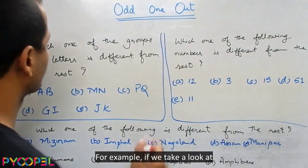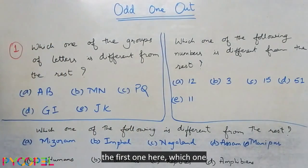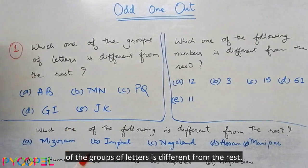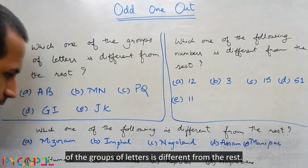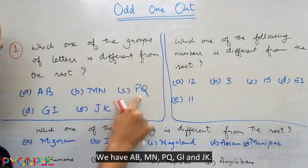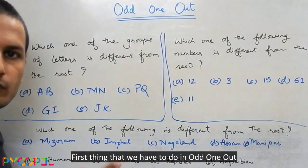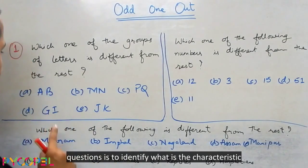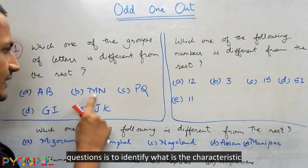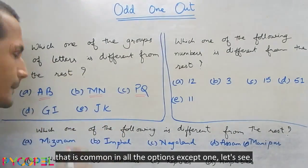For example, if we take a look at the first one here: which one of the groups of letters is different from the rest? We have AB, MN, PQ, GI, and JA. The first thing we have to do in odd one out questions is to identify what characteristic is common in all the options except one.